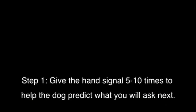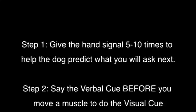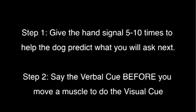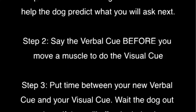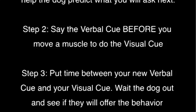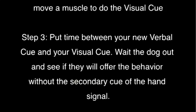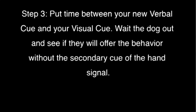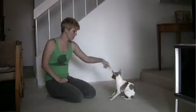Step one: give the hand signal five to ten times to help the dog predict what you're going to ask next. Step two: say the verbal cue before you move a muscle to do the visual cue. Step three: put time between your new verbal cue and your visual cue. Wait the dog out and see if they will offer the behavior without the secondary cue of the hand signal.